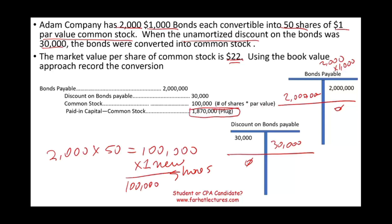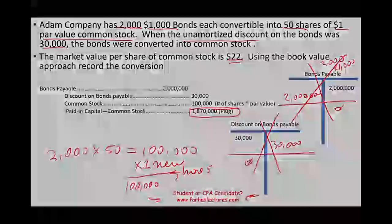What I did is I converted: I removed the bonds, I issued the stocks, and all I did was change my financing structure from a liability to equity. Go to Farhat Lectures and look at additional MCQs and true-false exercises. That's going to help you whether you are an accounting student, CPA candidate, CMA candidate, or looking to improve your accounting knowledge. Good luck everyone, study hard, and stay safe.